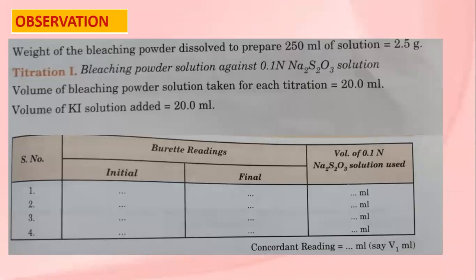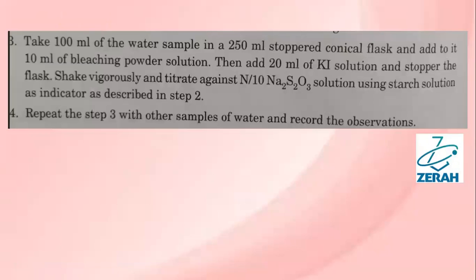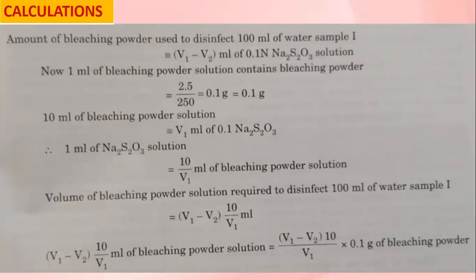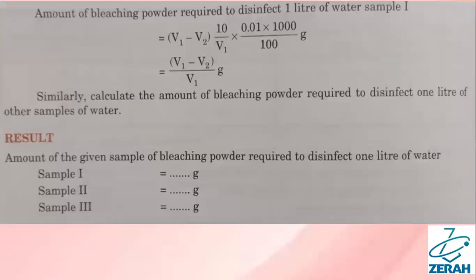This is the observation table. Then testing of water: 100 ml of the sampled water is taken in a 250 ml conical flask, 10 ml bleaching powder solution and 20 ml 10% KI solution are added, then titrated against sodium thiosulphate taken in the burette, using starch according to the first principle. The observation tables are given here. Then do the calculation according to this procedure, then write the result.